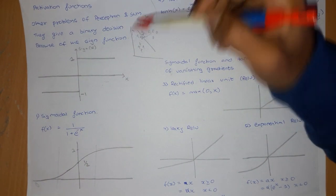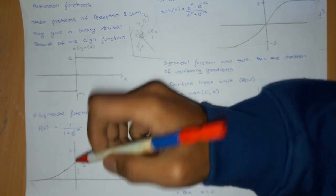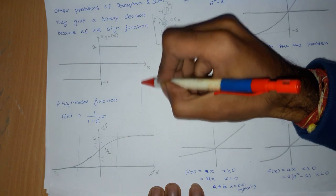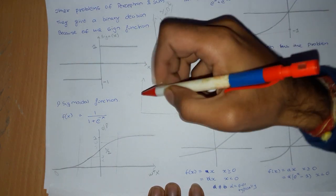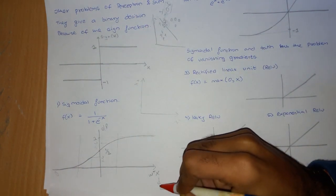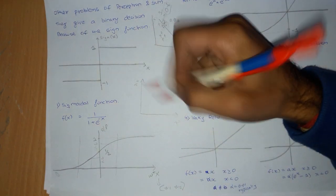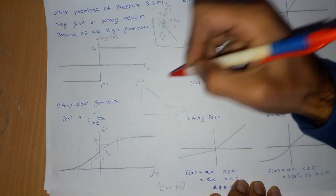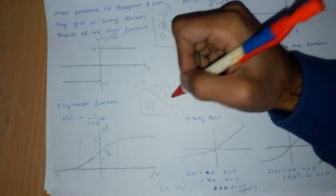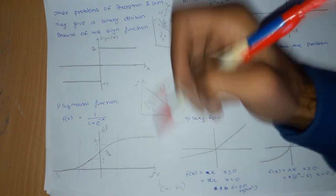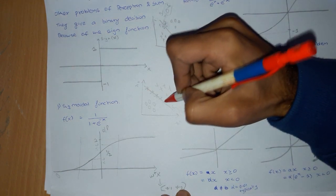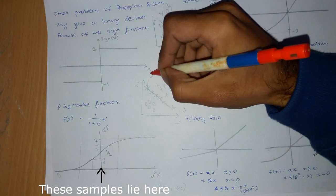In the feature space with axes x1 and x2, where x is a vector, there is a decision boundary omega. For samples lying on this line, omega transpose x will be 0 — this is the same as what we saw in the perceptron and SVM.